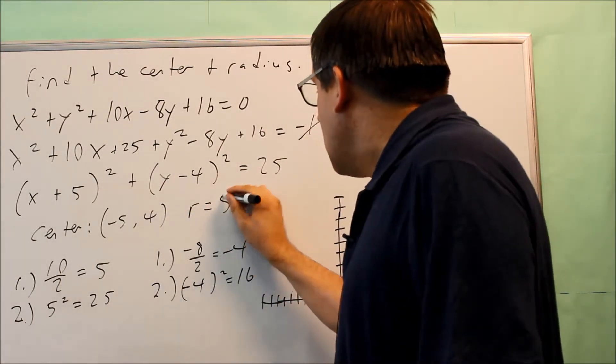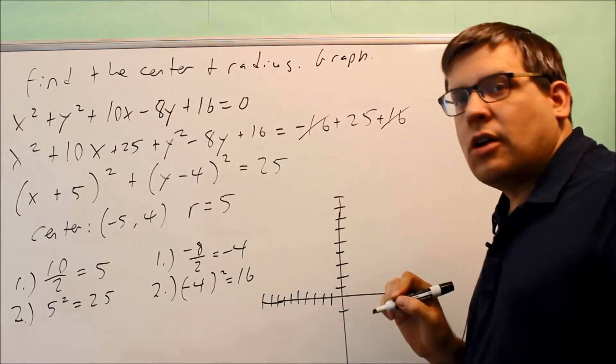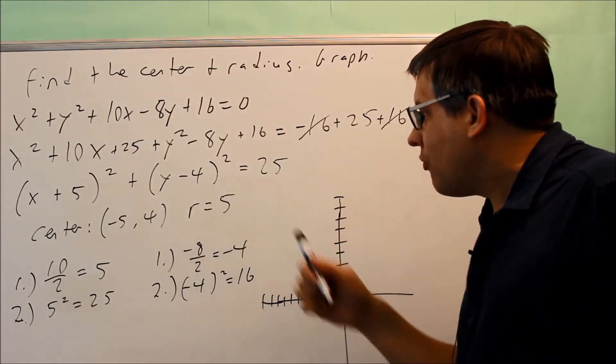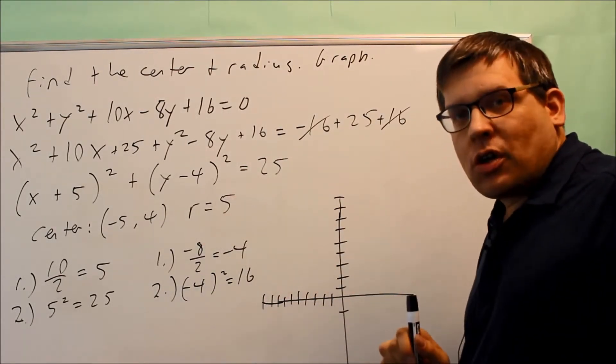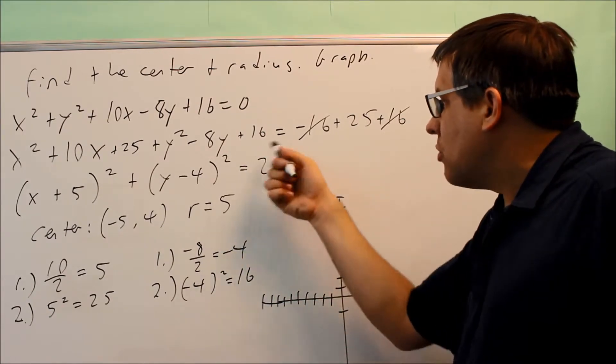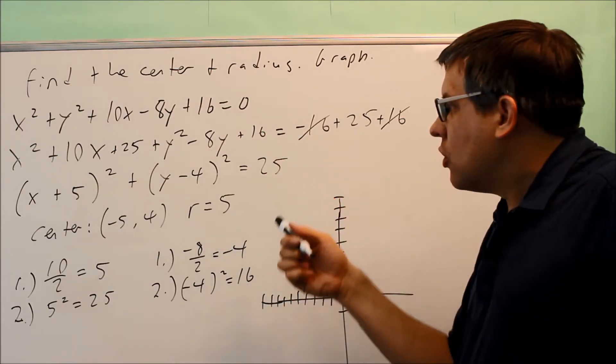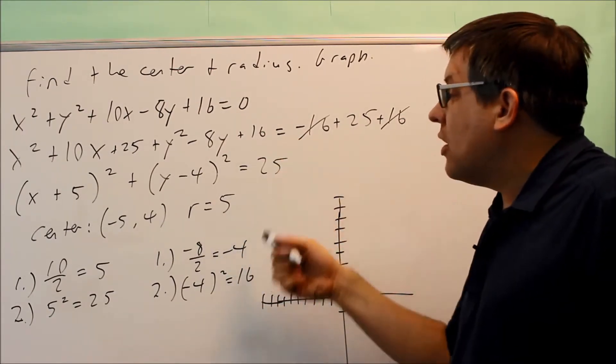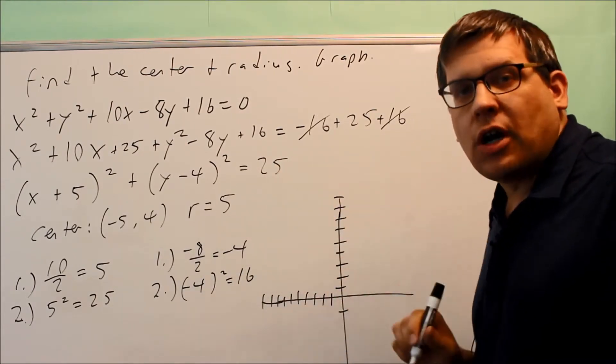My radius is going to be the square root of this number right here. So the square root of 25 is going to be 5. We're doing the square root because standard form tells us that this is going to be r squared. So if this is r squared already, that means the square root will give us just r by itself.